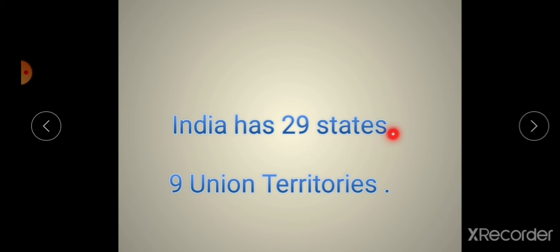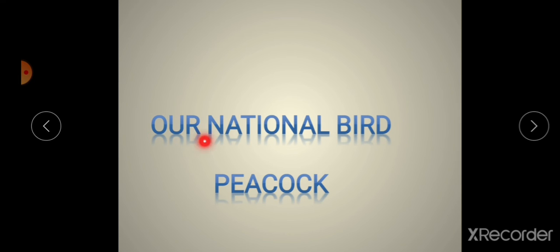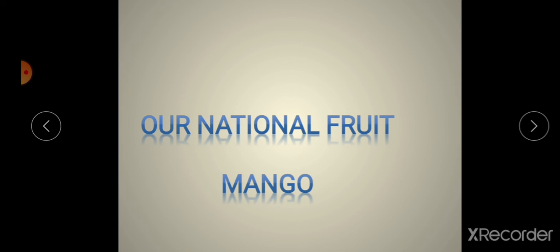India has 29 states and nine Union Territories. India ke paas 29 states hain aur nine Union Territories hain.